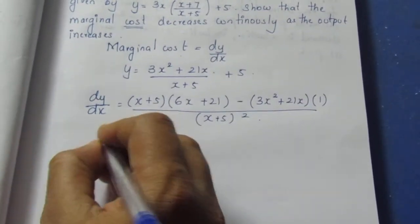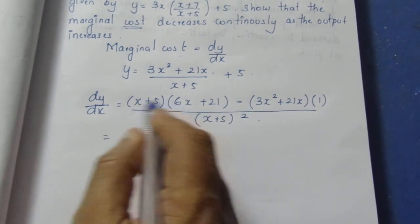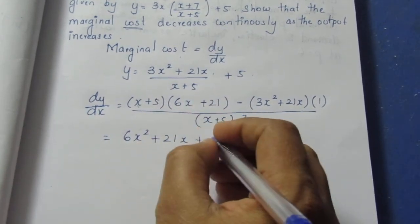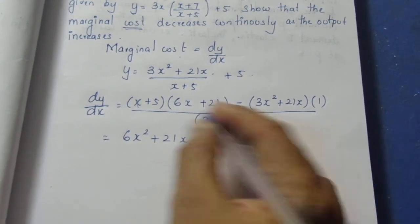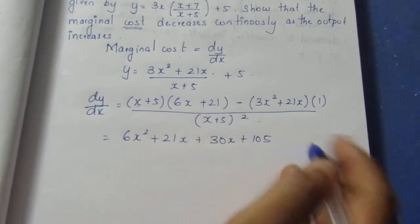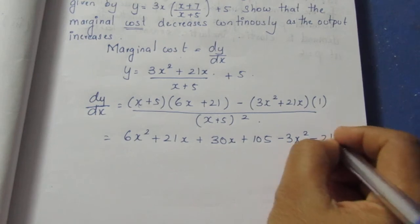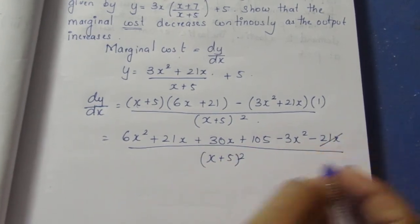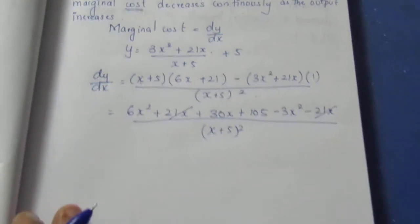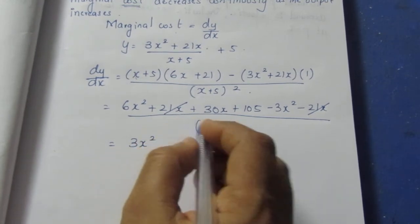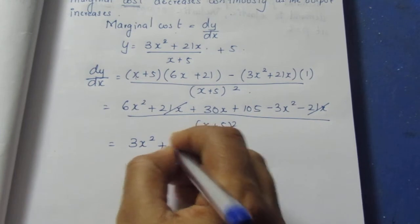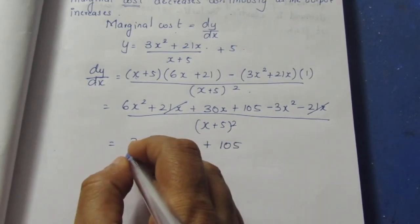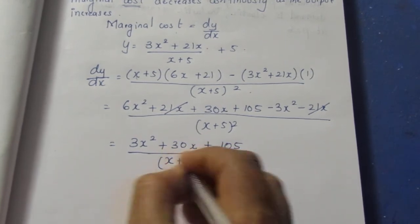Now solve this. Multiplying out: 6x squared plus 21x plus 30x plus 105 — that is (x plus 5) times (6x plus 21). Then subtract the numerator term: minus 3x squared minus 21x. So minus 21x and plus 21x cancel. Like terms combine, giving 30x plus 105, all over (x plus 5) squared.